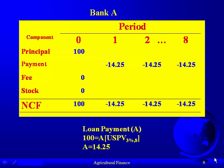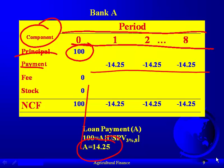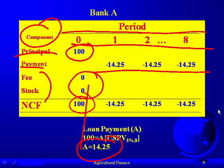If we lay this out in a chart, we have the timeline across the top and then the components below. The first component is the principal — we're borrowing $100 today, which is cash to the business. The payment is uniform: we make eight payments of $14.25 every three months. The fee and stock are zero. So the net cash flow is a positive $100 inflow today from the lender, and in return we pay eight payments of $14.25.